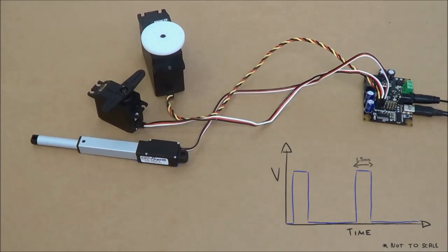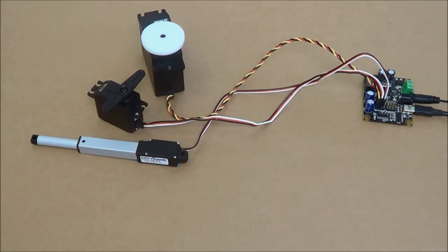A pulse width of 1.5 milliseconds is going to equate to exactly half of your servo motor's full range. And this is all accomplished by that magical integrated circuit that was mentioned before.